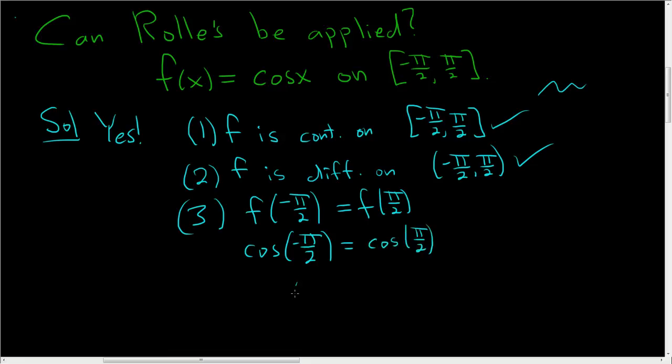Well, the cosine of negative pi over 2, that's 0. Think of the unit circle. Here's the unit circle. Negative pi over 2 is right here. Cosine is the x-coordinate. The x-coordinate here is 0. Cosine of pi over 2 is here. Here's pi over 2. And it's the x-coordinate. What's the x-coordinate here? 0.